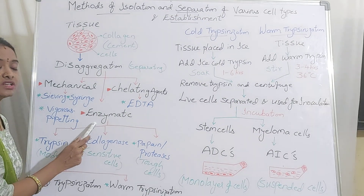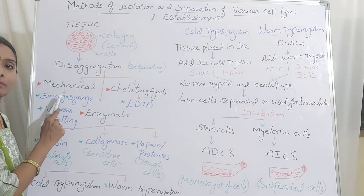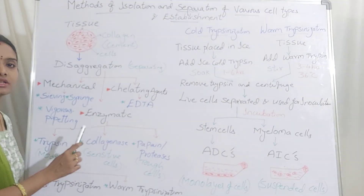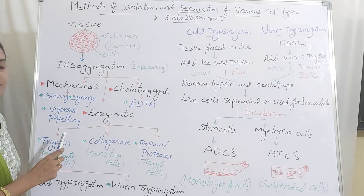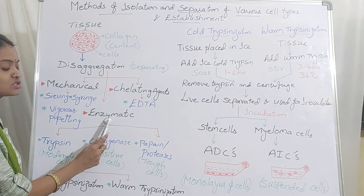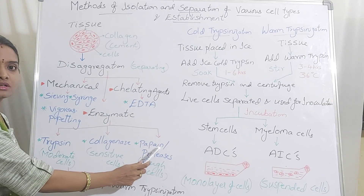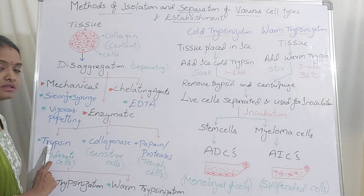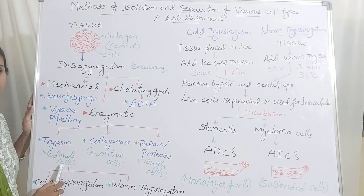The enzymatic disaggregation process is a very gentle method where there is no harsh chemical or mechanical treatment. The enzymes act gently on the tissue and dissolve the collagen present between the cells. In enzymatic disaggregation, we can use different types of enzymes. Trypsin is used in the case of moderate cells.